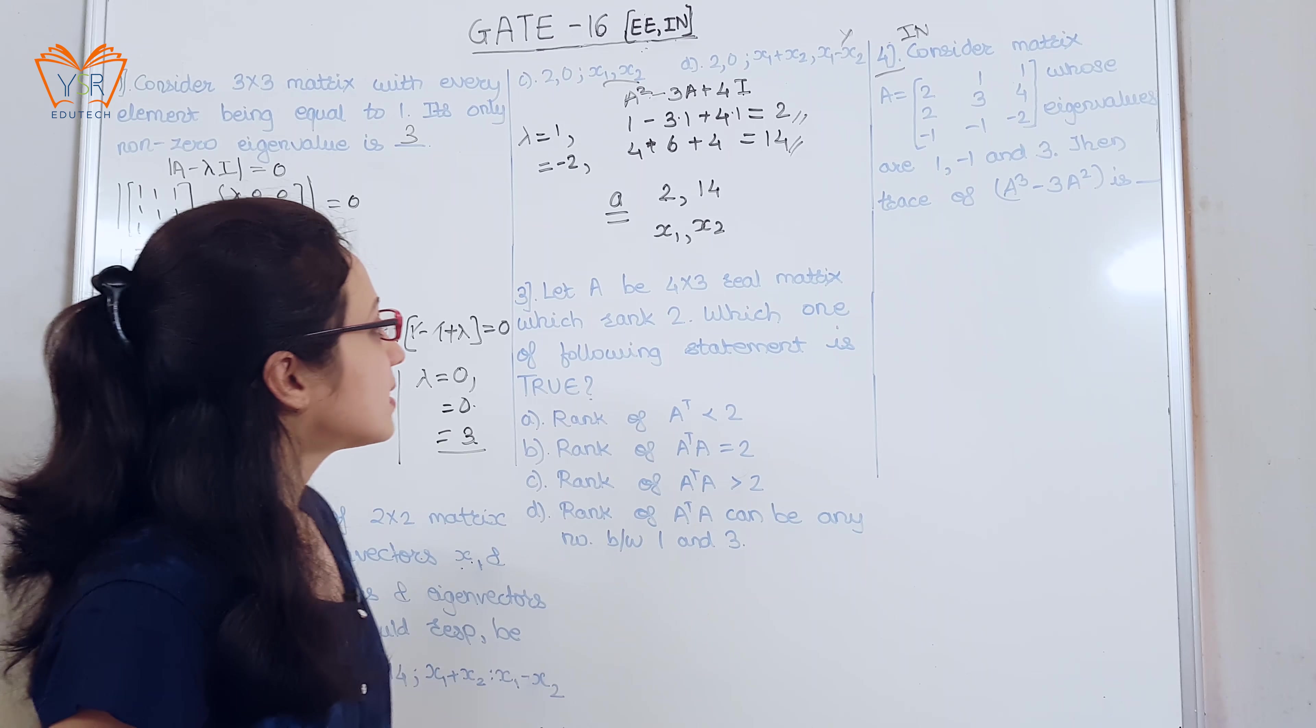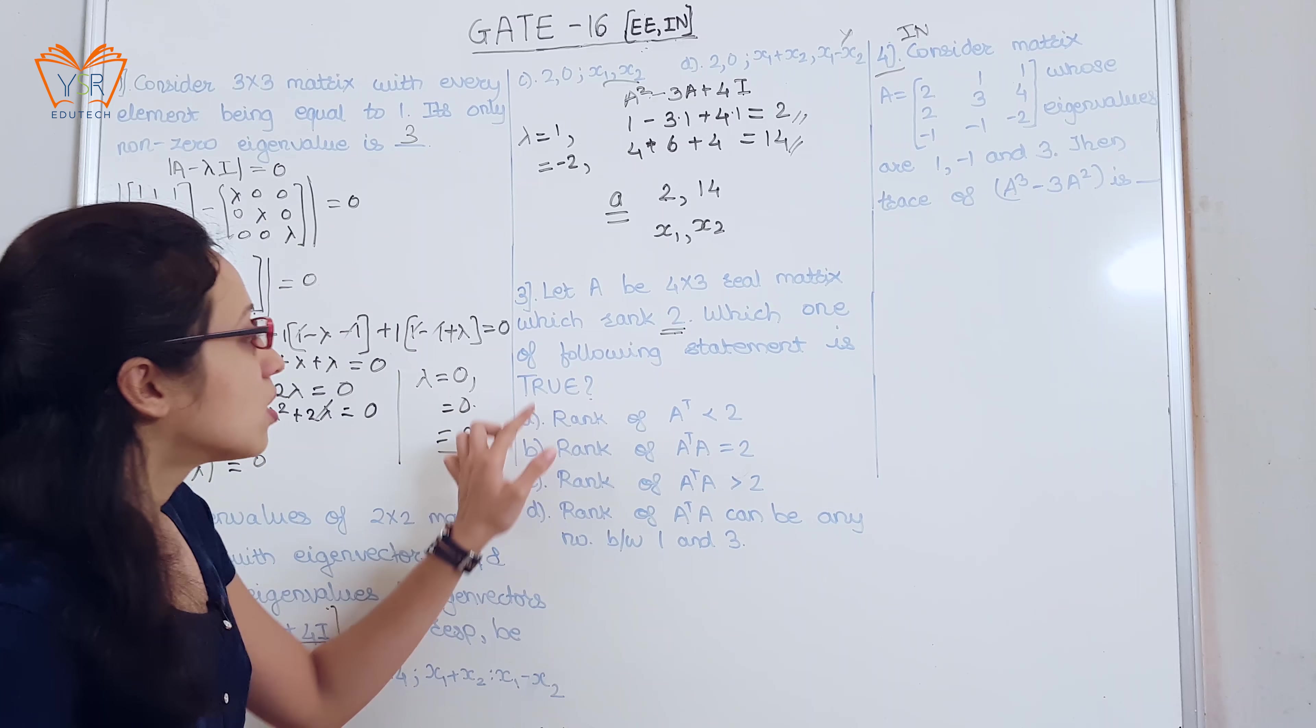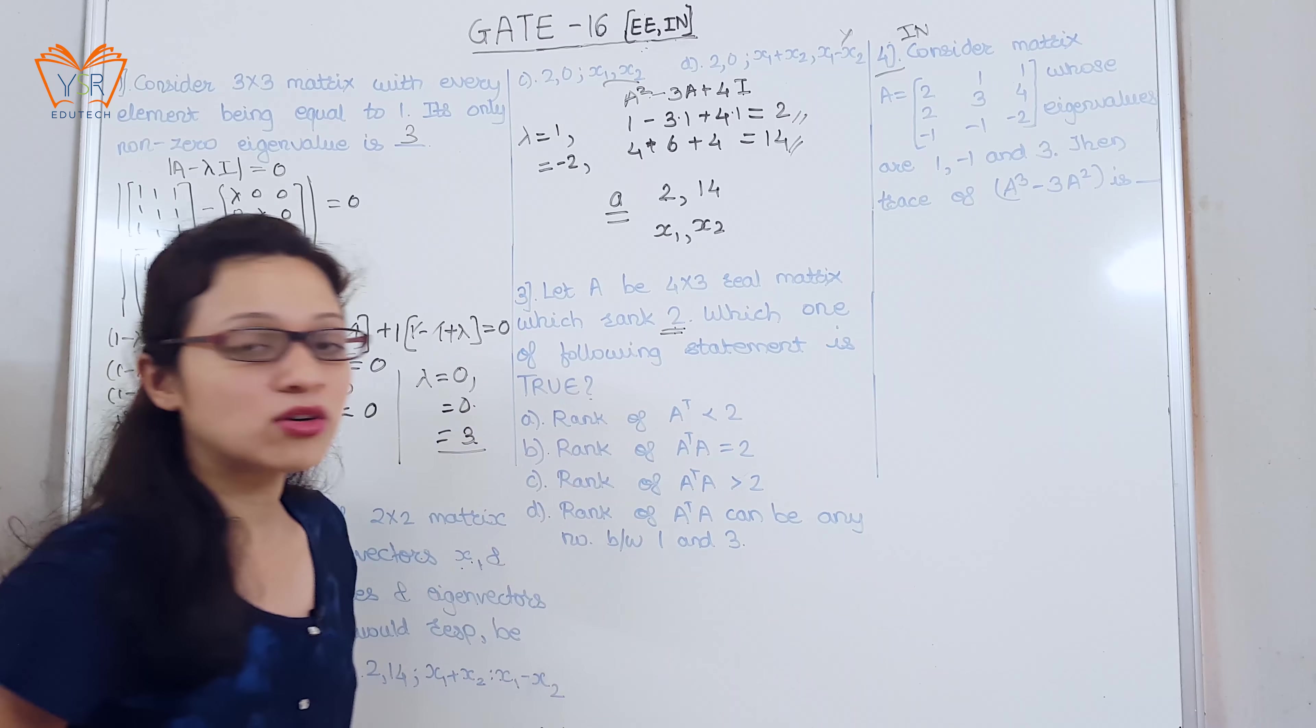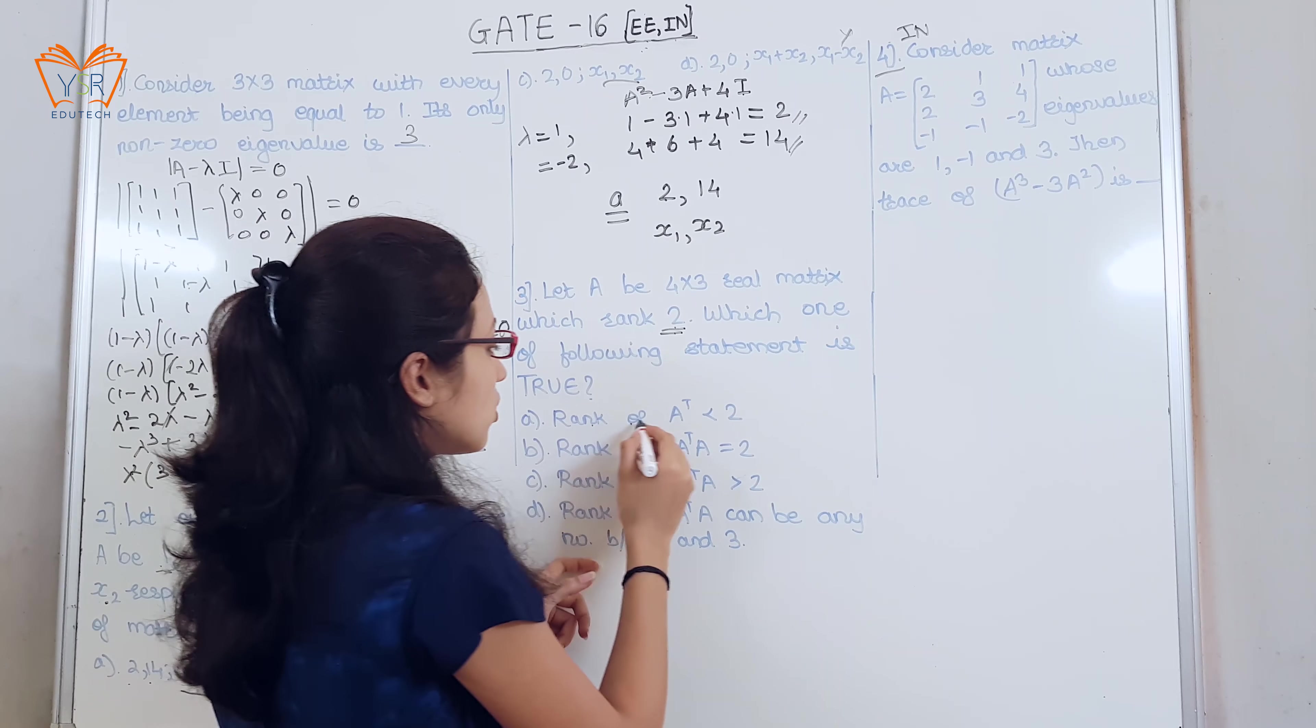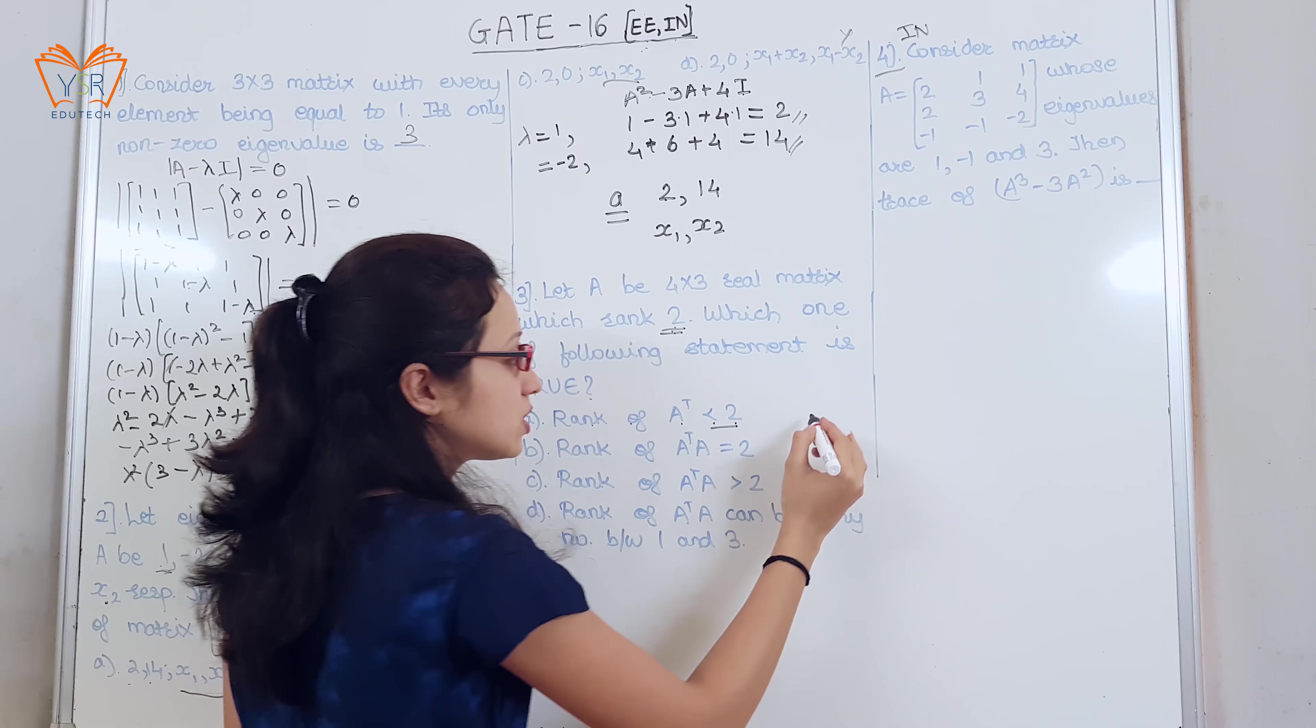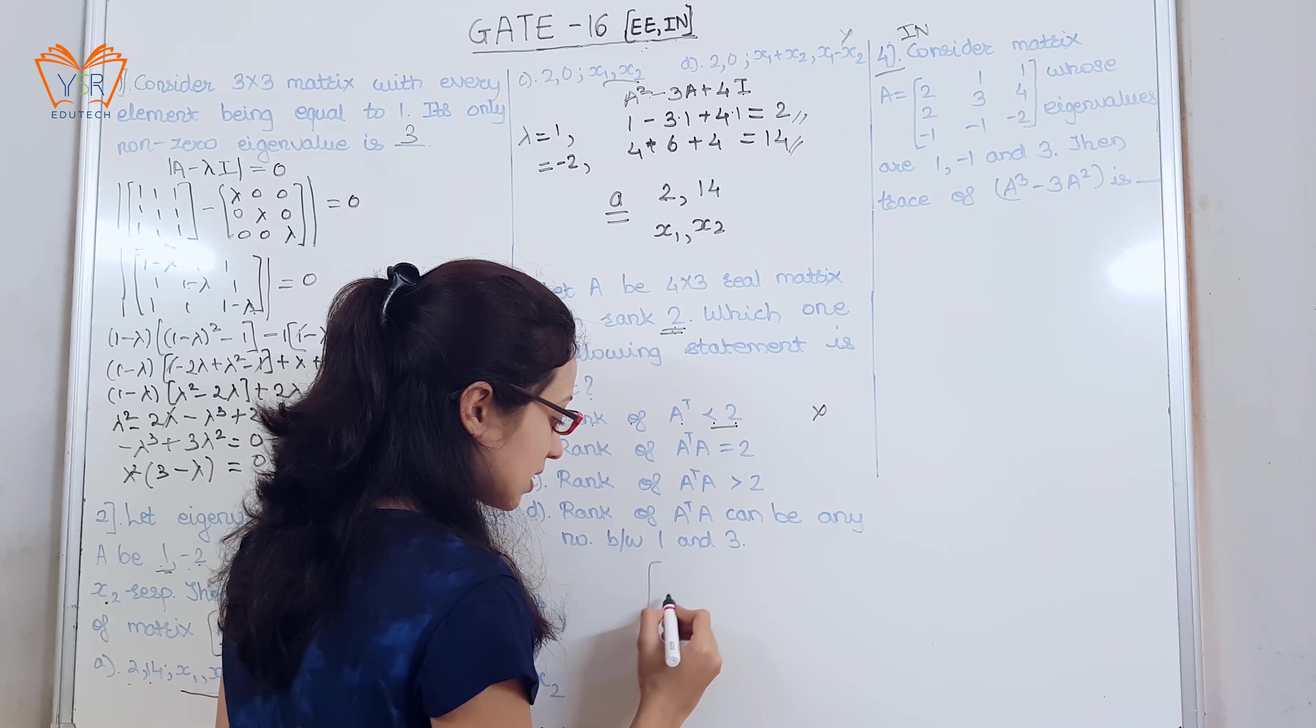The third example, let A be 4 into 3 real matrix with rank 2. Which one of the following statement is true? So, A is any matrix of order 4 into 3, they have already given the rank of that matrix is 2. Now, let us see which of the following statement is true. Rank of A transpose is less than 2. Now, as we know the rank specified is 2, it cannot be less than 2. So, this statement is false. Rank of A transpose into A is equal to 2. Now, for this statement let us consider one example.